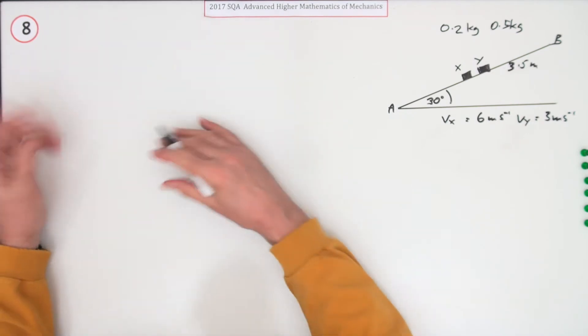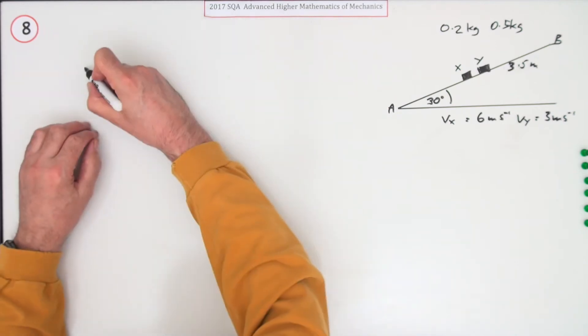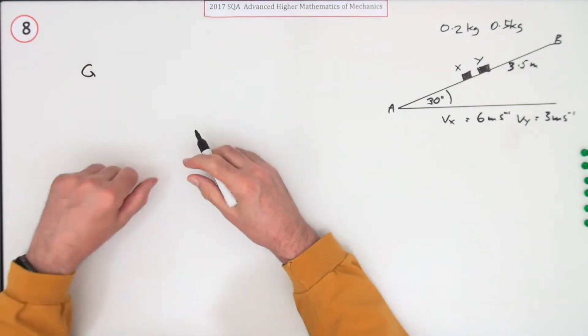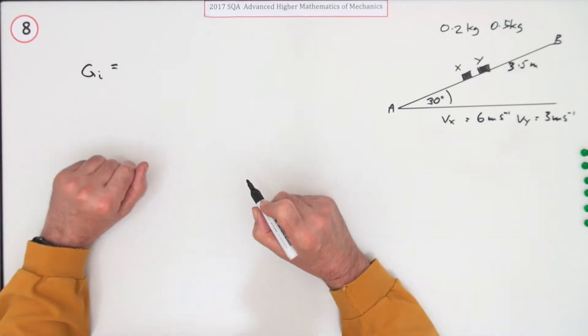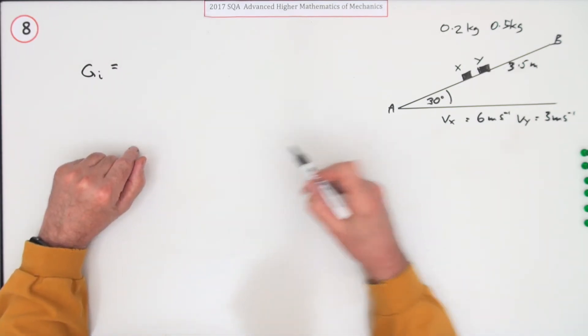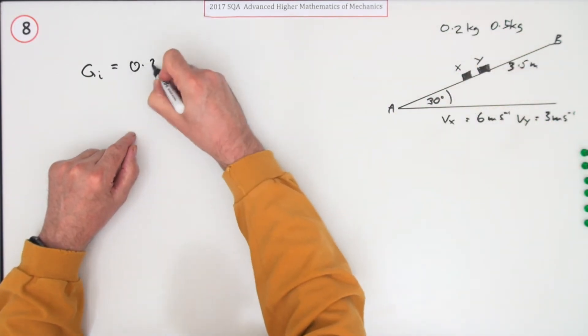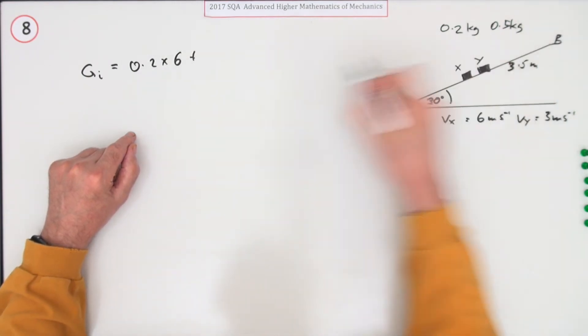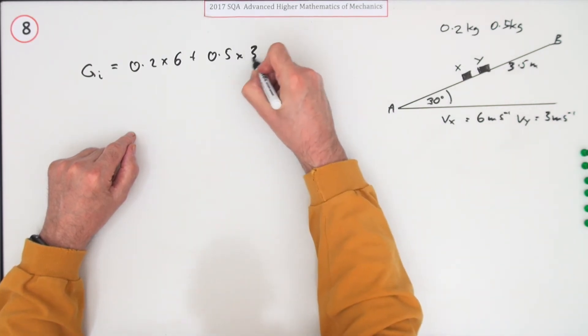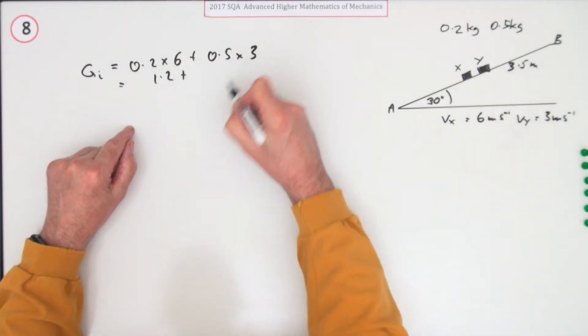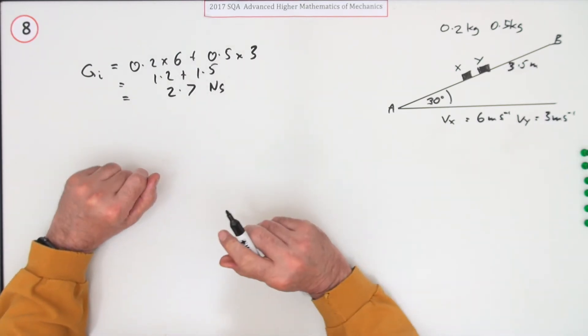What are you going to put for momentum? Various texts use different letters for that. I've seen P. You could just write the word momentum. G is another letter that's also used for momentum. So I'll go G_i, standing for the initial momentum. What is the initial momentum? It'll be for X it's 0.2 times 6 and for Y it's 0.5 times 3. So that's going to be 1.2 plus 1.5 which is 2.7 newton seconds.